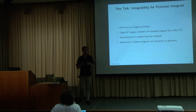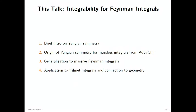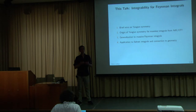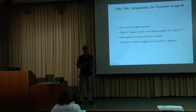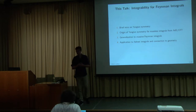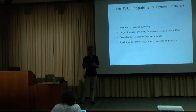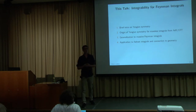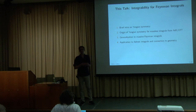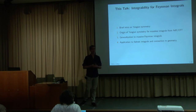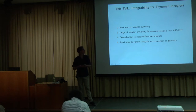This talk is about the connection between integrability and Feynman integrals. In the first part I will briefly tell you that by integrability I actually mean Yangian symmetry. Then I will tell you how massless Feynman integrals inherit such a Yangian symmetry from the planar ADS-CFT correspondence. I will briefly sketch how this generalizes to massive Feynman integrals, which a priori is somewhat surprising, because in the context of a massive phase of N=4 super Yang-Mills theory we don't know of any integrable structures so far. And finally I will come to an application to fishnet integrals, which leads to a nice connection to geometry.